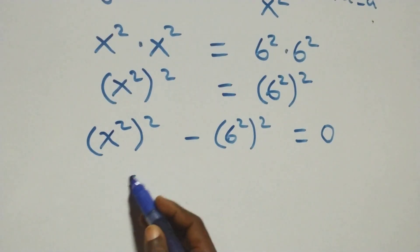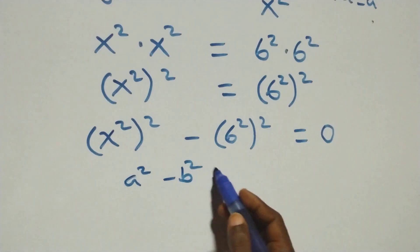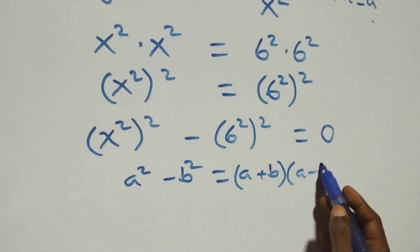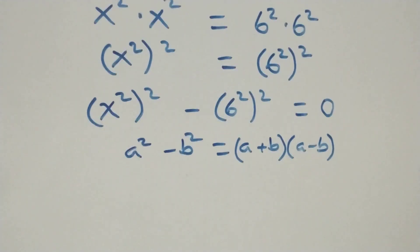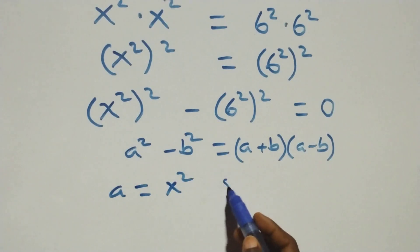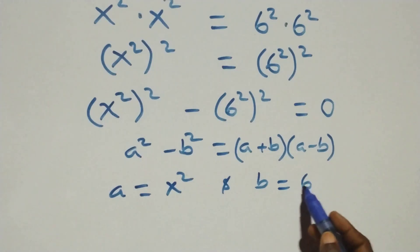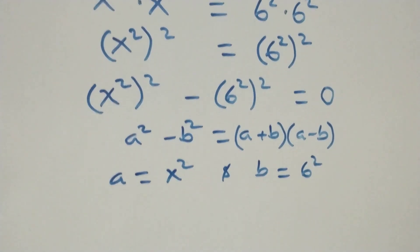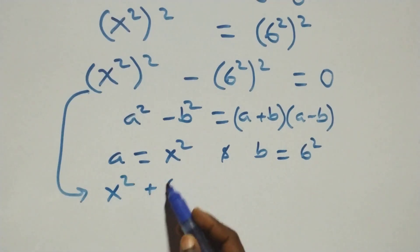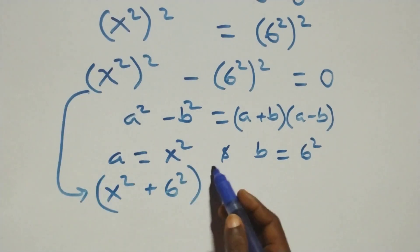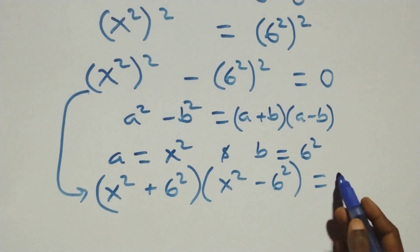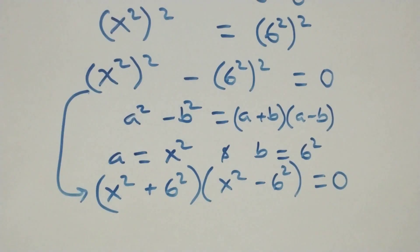This follows the identity a² minus b² which can be written as (a + b)(a − b). Here a stands for x² and b stands for 6². So we have (x² + 6²)(x² − 6²) equals zero.